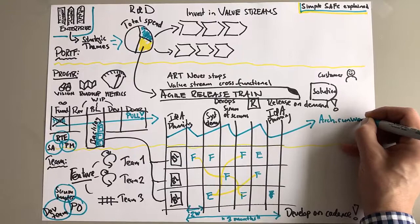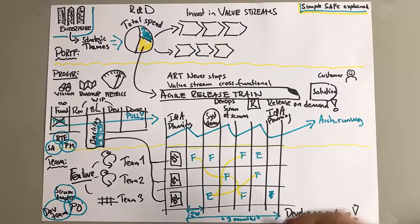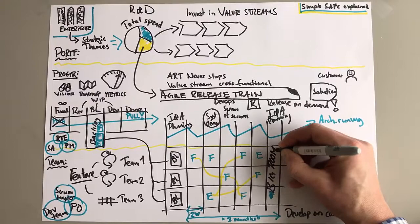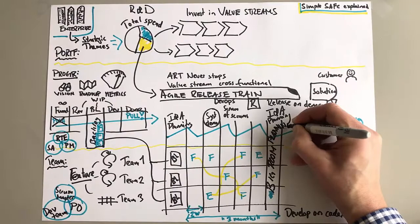Now another important thing that you would have to look after on the program level - the architectural runway. Now the teams are building features, but they're also building enablers. And the enablers, that's what's going to enable us to build new features in the future.